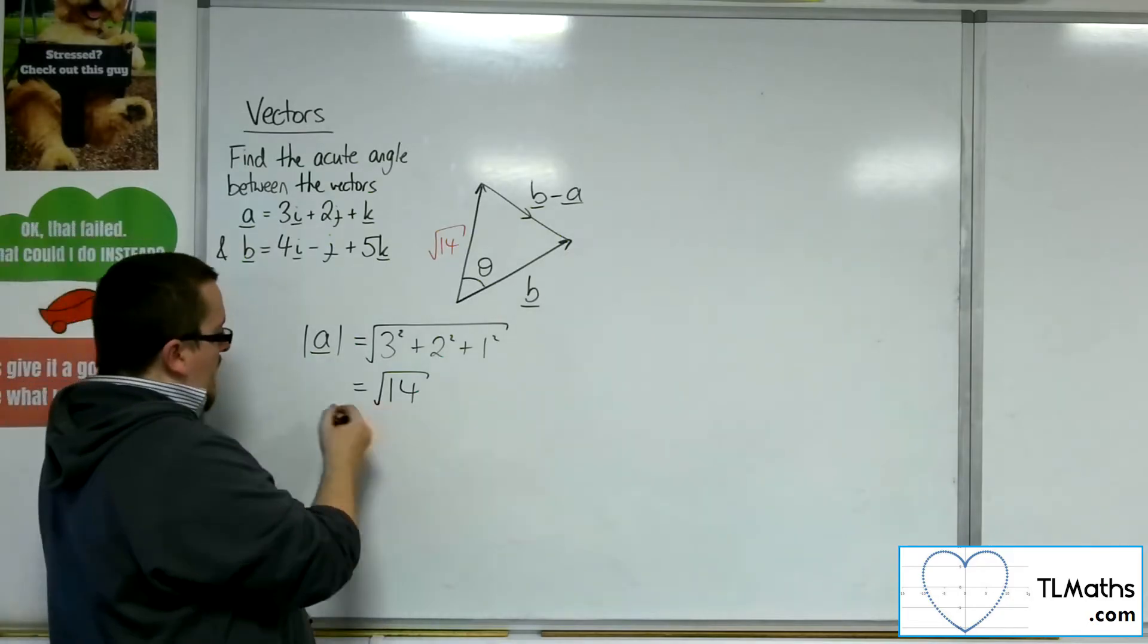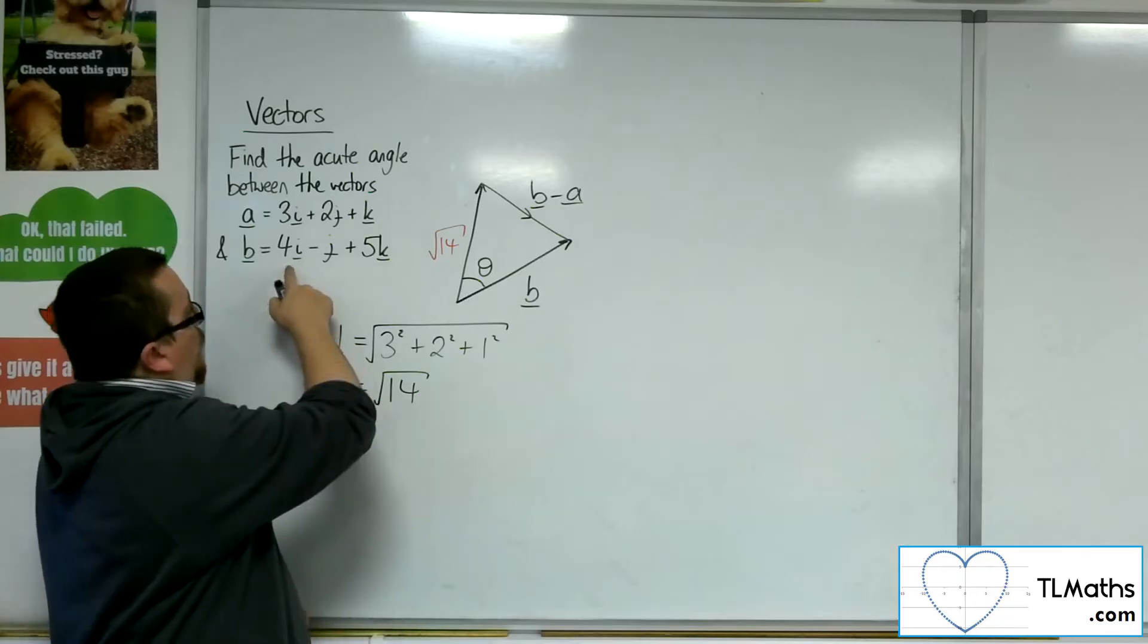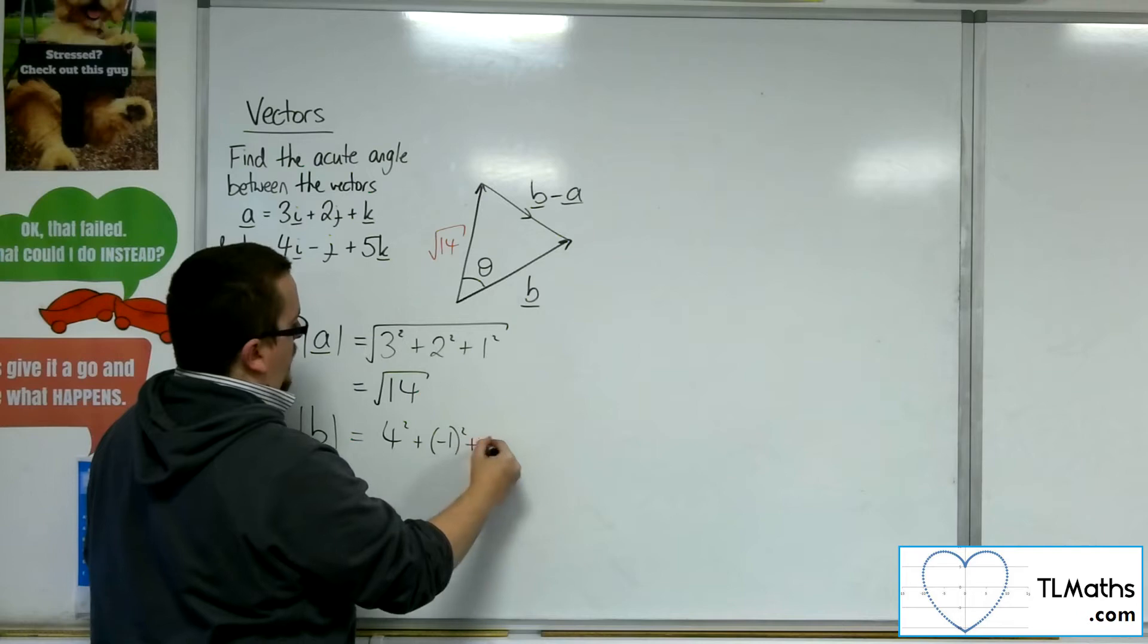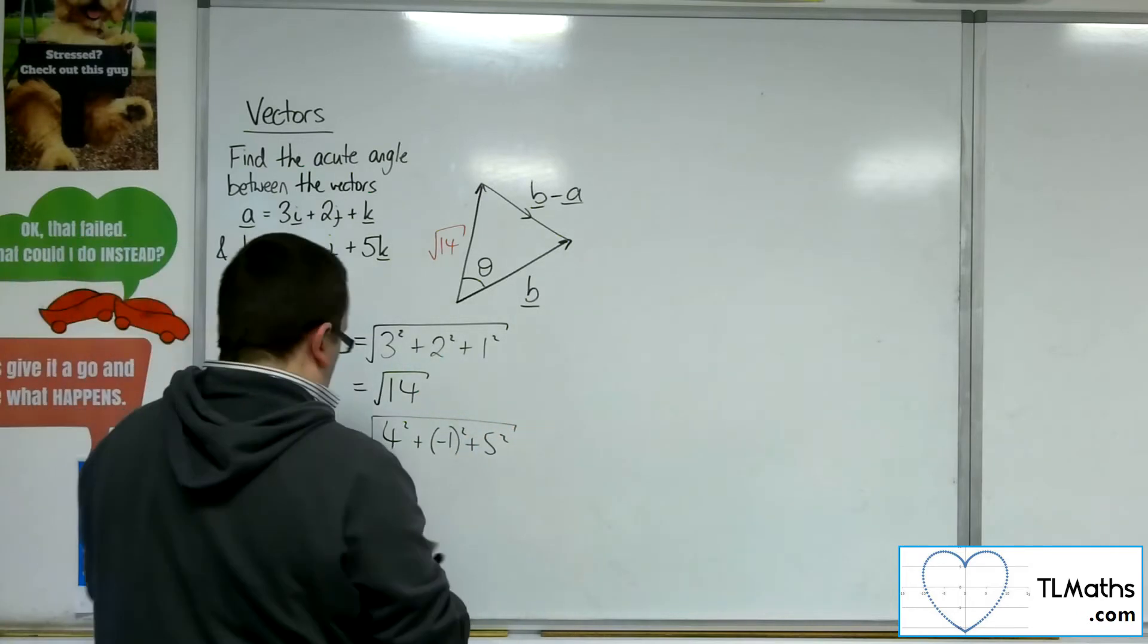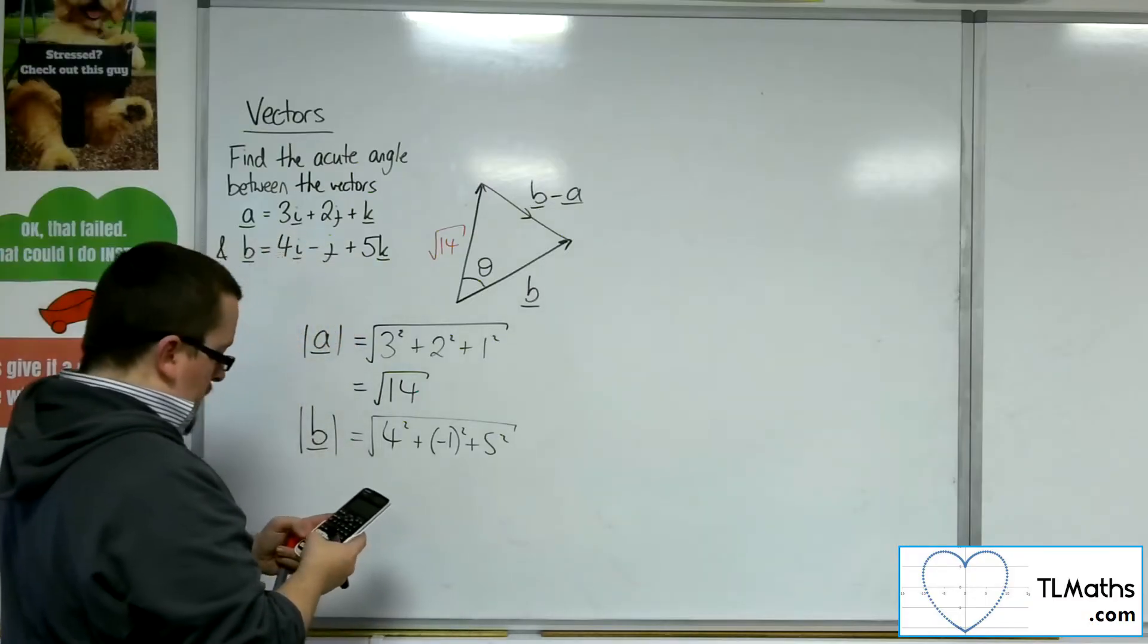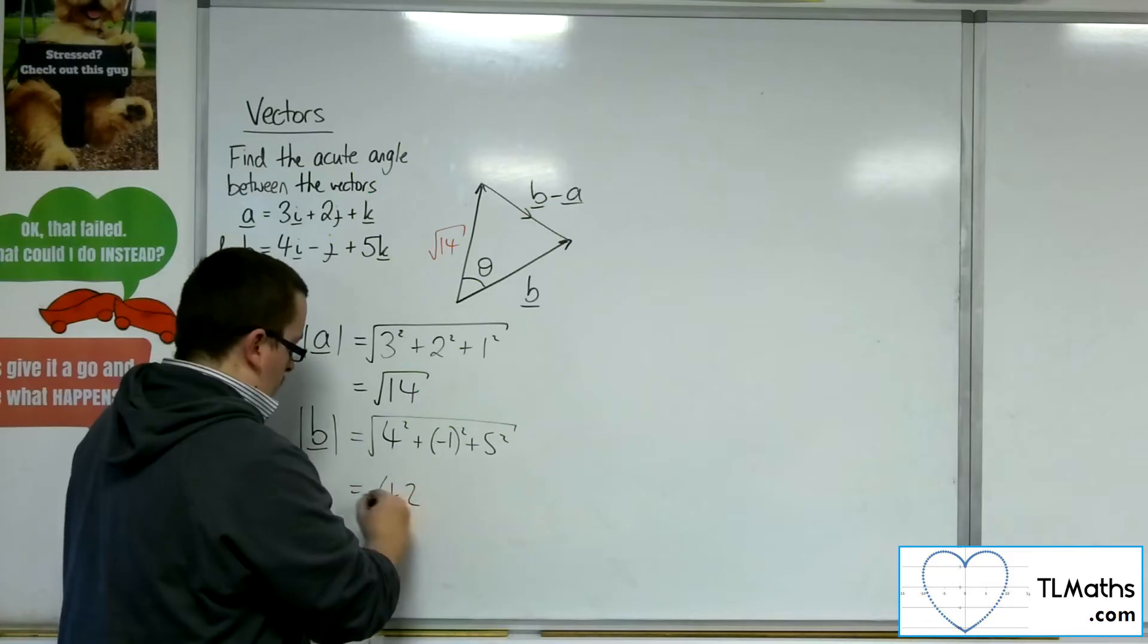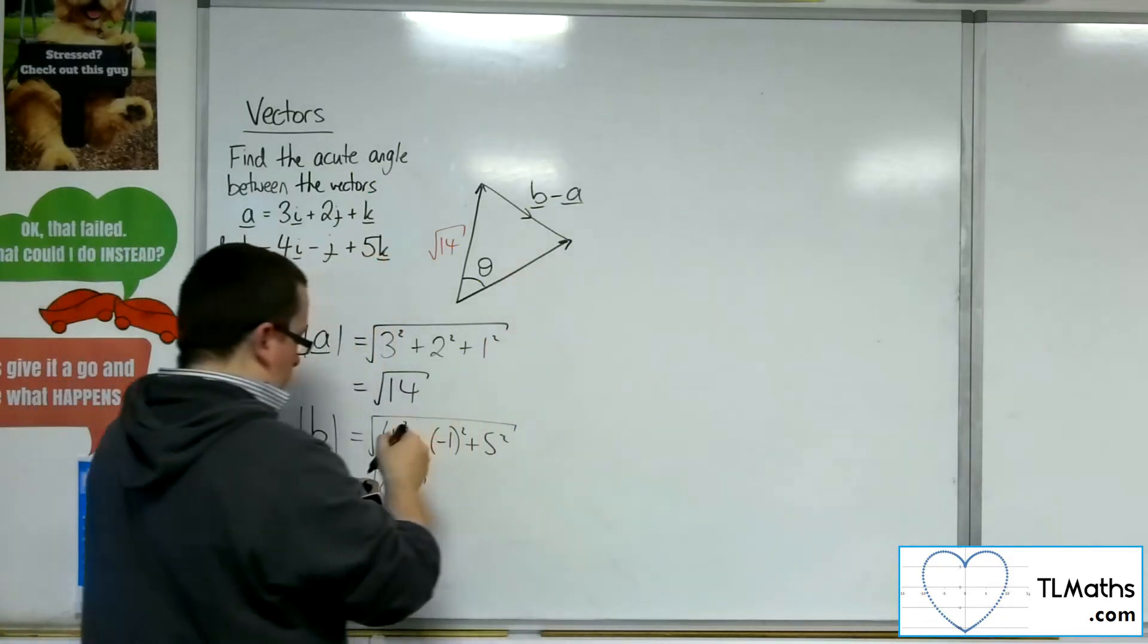I could then work out the length of B. So that would be 4 squared plus minus 1 squared plus 5 squared square rooted. So we've got 16 plus 1 plus 25, so 42 square rooted. So that's B, that's the length of B.